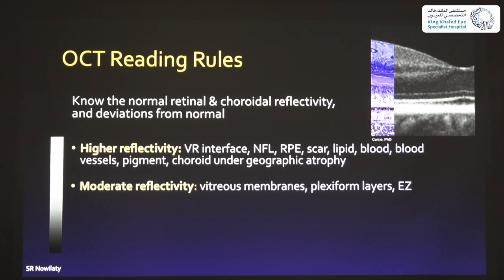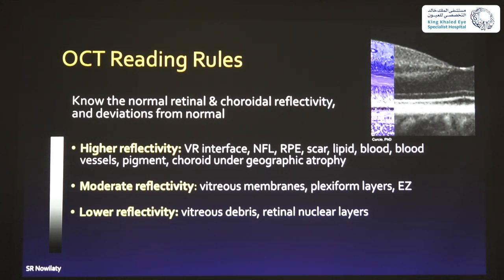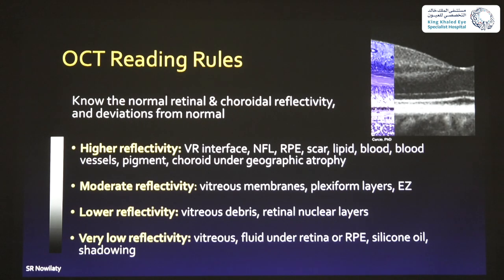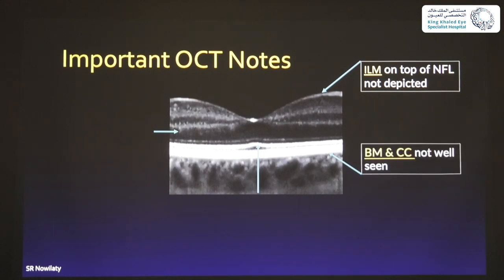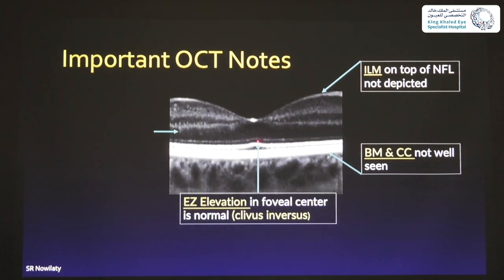Moderate reflectivity: vitreous membranes, plexiform layers, and the ellipsoid zone. Lower reflectivity: vitreous debris and the retinal nuclear layers. Very low reflectivity — almost none — includes clear vitreous, clear subretinal fluid, silicone oil, and areas of shadowing. Remember: the ILM on top of the nerve fiber layer is not seen unless it's very thick. The Bruch's membrane and choriocapillaris are difficult to see when the RPE is sitting on top of them because the RPE is so reflective.